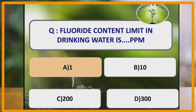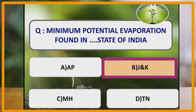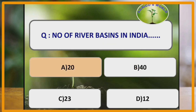Fluoride content in drinking water is how much ppm? The fluoride content in drinking water is about 1 ppm. Minimum potential evaporation is found in Jammu and Kashmir state of India. Number of river basins in India are 20.